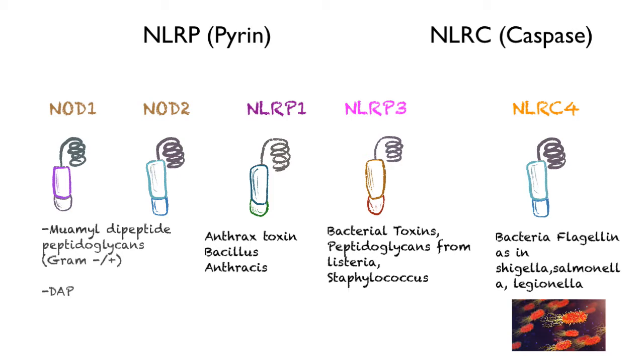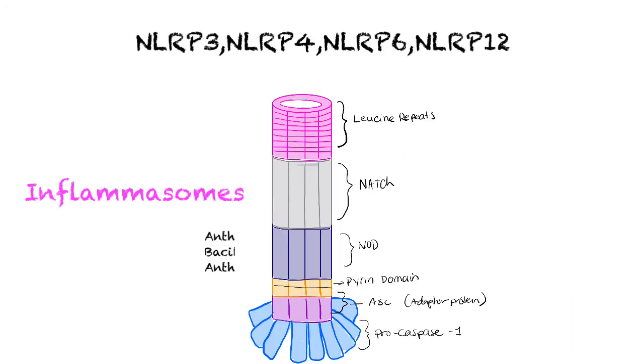We're about to talk about inflammasomes, and we should say that it's the NOD-like receptors that are part of the pyrin family that are forming these inflammasomes, like NLRP3, P4, P6, P12.